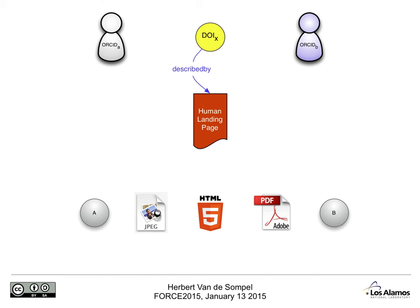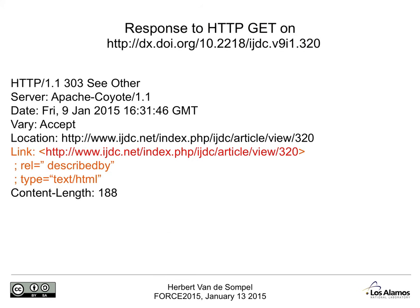So let's introduce signposts. I will use only relation types that are registered by IANA. First, let's clarify the relation between the DOI and the landing page. We're going to indicate that the thing identified by the DOI is described by the landing page. For the geeks, this is what the response to an HTTP GET on the DOI looks like — you see the link header with the relation in red.